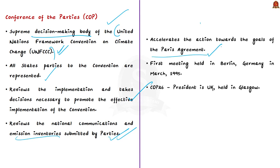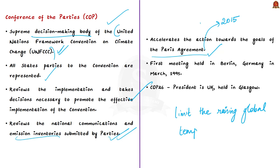The Paris Agreement was signed in 2015. Its main aim is to strengthen the global response to the threat of climate change. The target is to limit the rise in global temperature by 2 degrees Celsius compared to pre-industrial levels by the end of this century. In addition, there is a target to limit the temperature increase further to 1.5 degrees Celsius. The COP accelerates the action needed to achieve these targets.